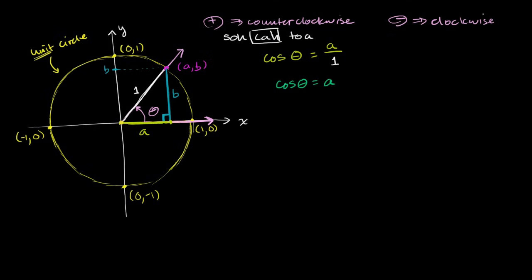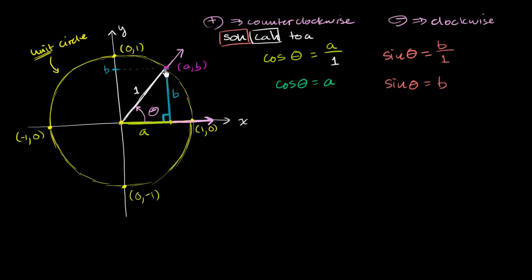Now let's think about the sine of theta. We just look at the SOH part of our SOH CAH TOA definition — sine is opposite over hypotenuse. The opposite side here has length b, and the hypotenuse has length 1. So the sine of theta is equal to b. So this point where our terminal side intersects the unit circle, that point (a, b), we could also view it as: a is the same thing as cosine of theta, and b is the same thing as sine of theta. That was just using our SOH CAH TOA definition.